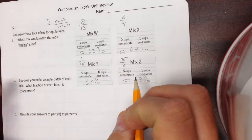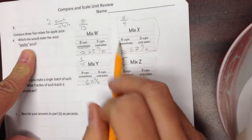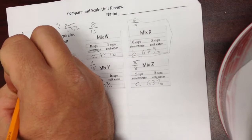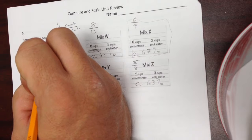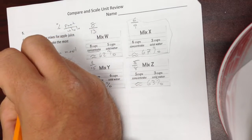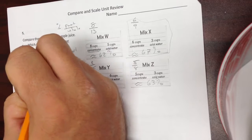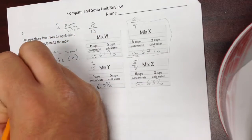So the one that has the most, is going to be the most juicy. It's going to be Mix-X. Mix-X is the most juicy with 67% concentrate.